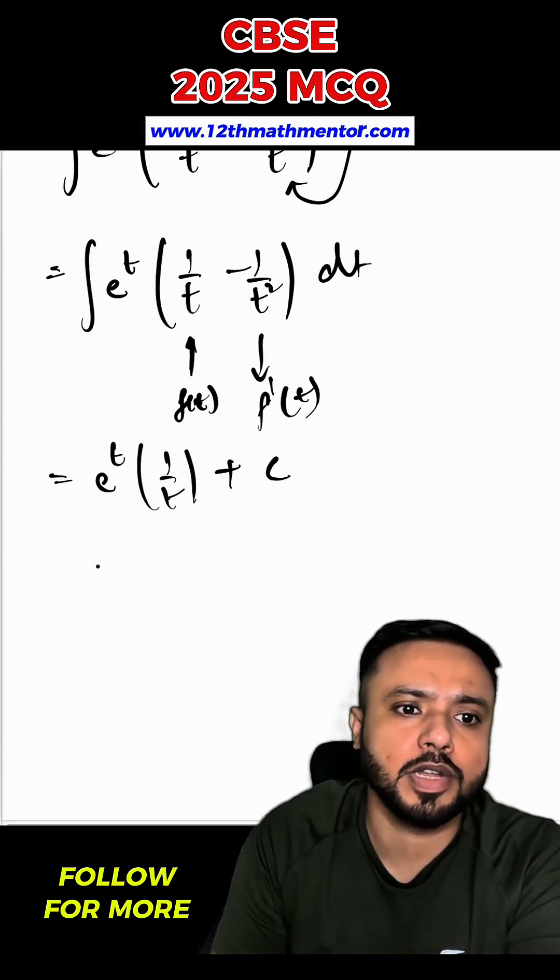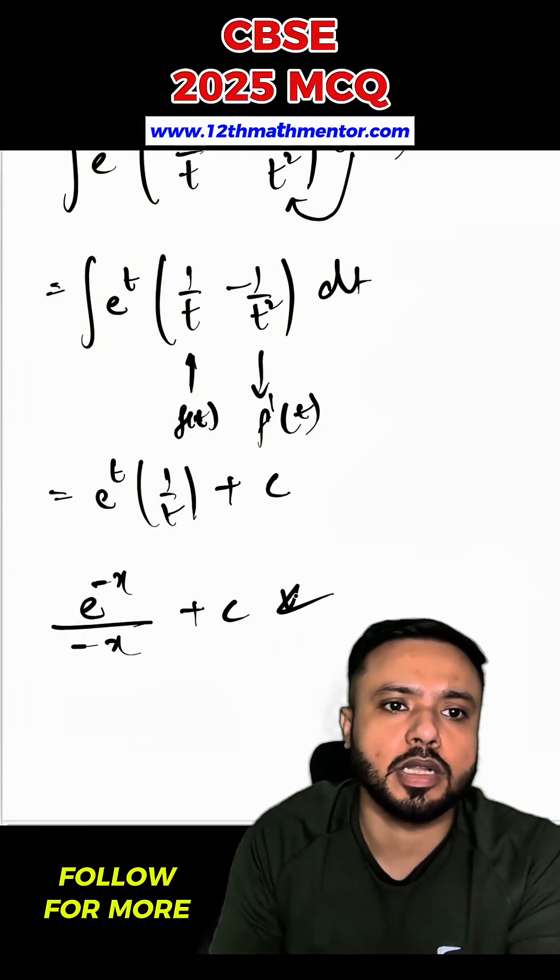Now we will substitute back the value of t, which was negative x. So e raised to the power negative x upon negative x plus c. This is my desired answer.